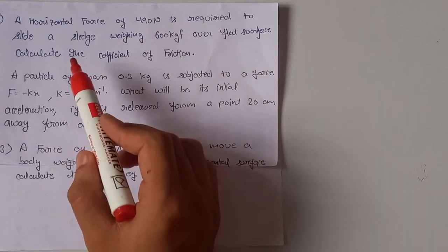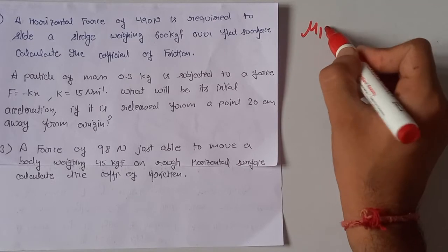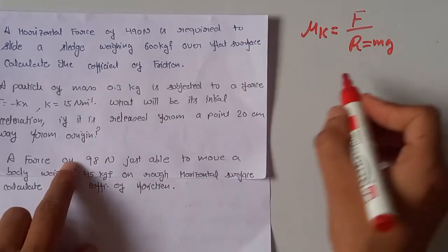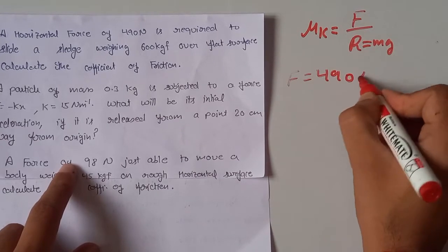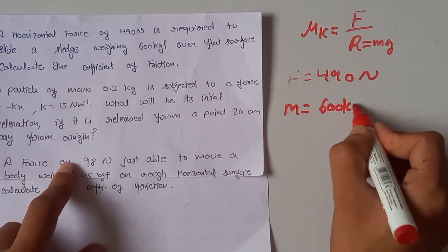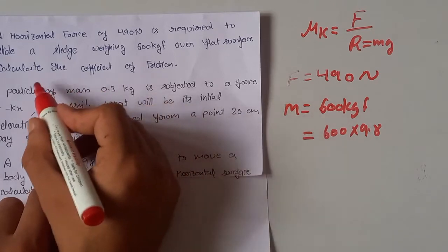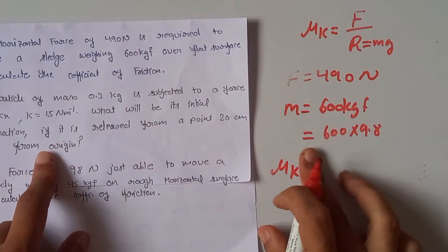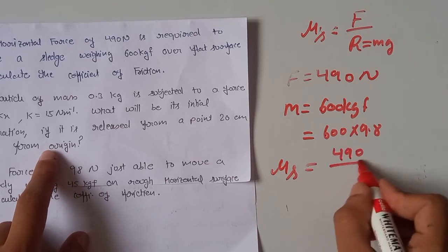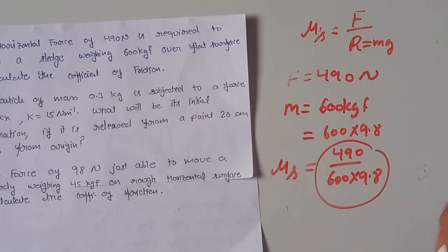Numerical 1: A horizontal force of 490 N is required to slide a slab weighing 600 kgf over a surface. Calculate the coefficient of friction. Using μk = F / R where R = mg: μk = 490 / (600 × 9.8). Calculating this gives the coefficient of friction.